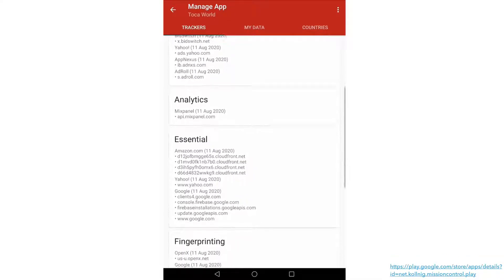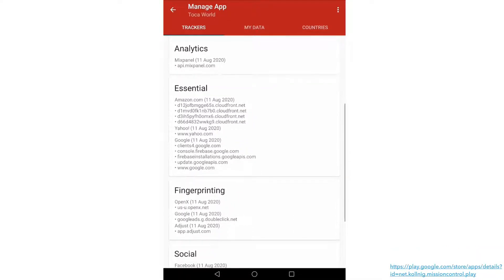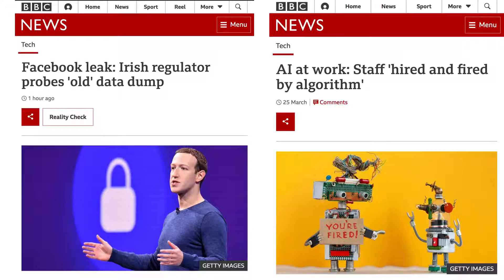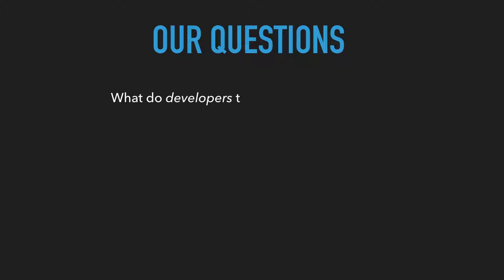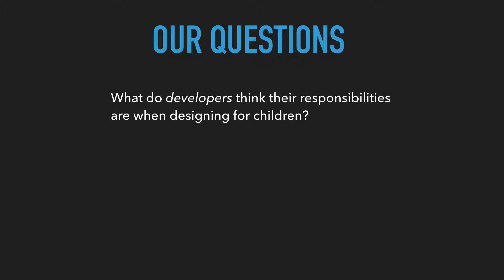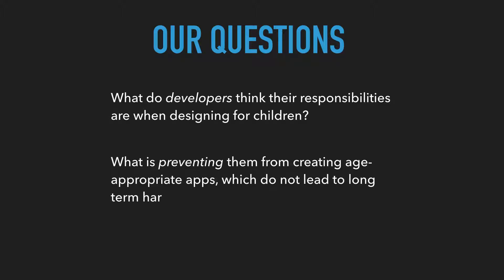This can lead to concrete harms for children, such as identity theft, as well as pose risks to their reputation and opportunities as they grow older. All of this makes us wonder about the role of developers. After all, they're the ones creating the apps, and in a way, this would make them responsible. So we wanted to find out: what do developers think their responsibilities are when designing for children, and what is preventing them from creating age-appropriate apps which do not lead to long-term harms?